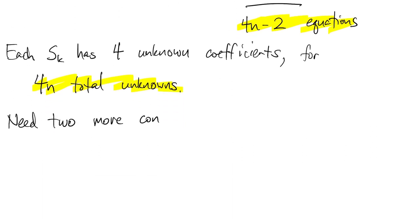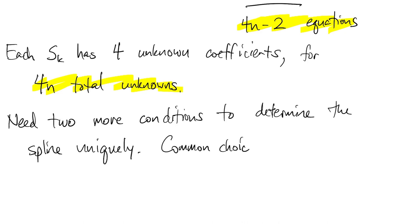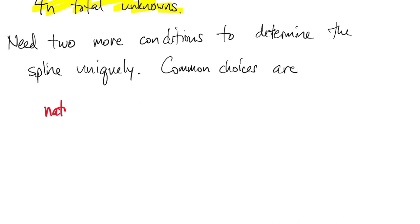In fact, there are many different ways that these additional conditions can be supplied. One very well-known way is called the natural spline. That involves the second derivatives at the endpoints.